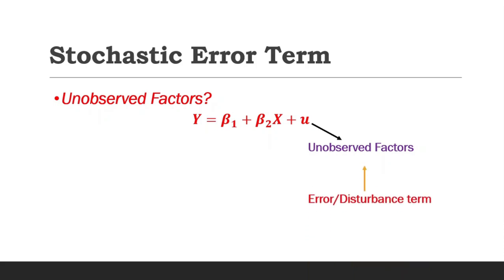While specifying econometric models, we come across unobserved factors. In a typical econometric model, u represents the unobserved factors, which are factors that affect the dependent variable Y but are not captured in the model. This unobserved factors parameter is also known as the error or disturbance term.